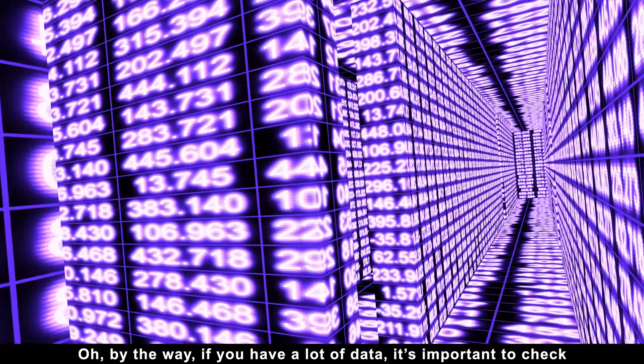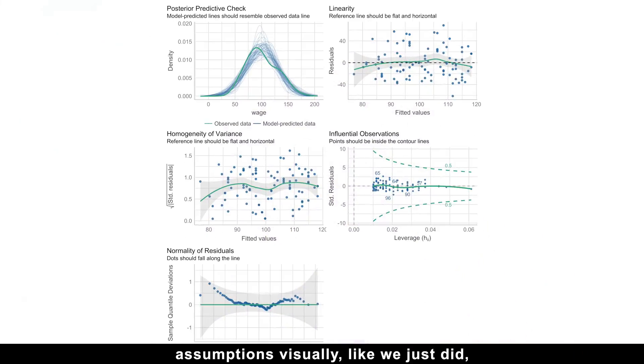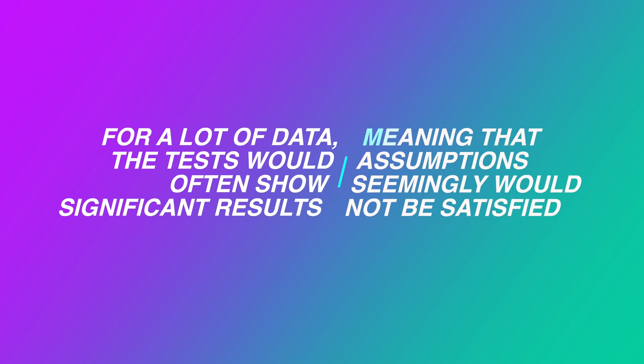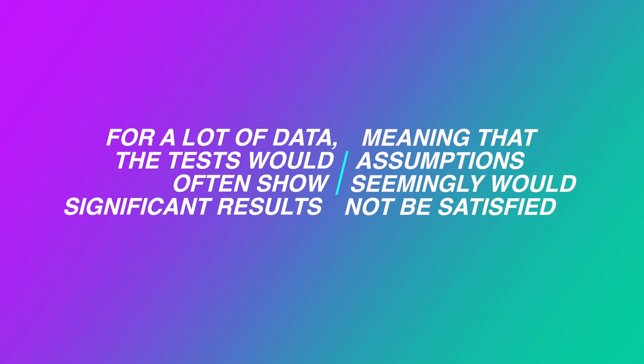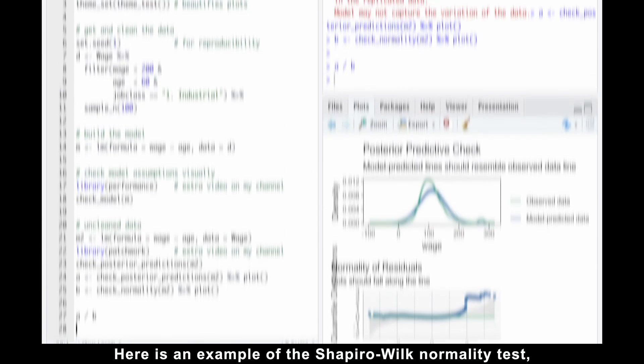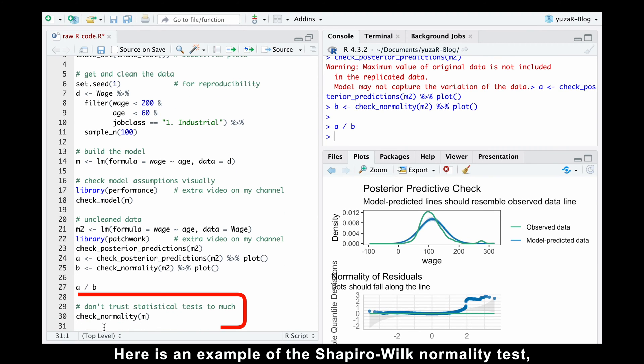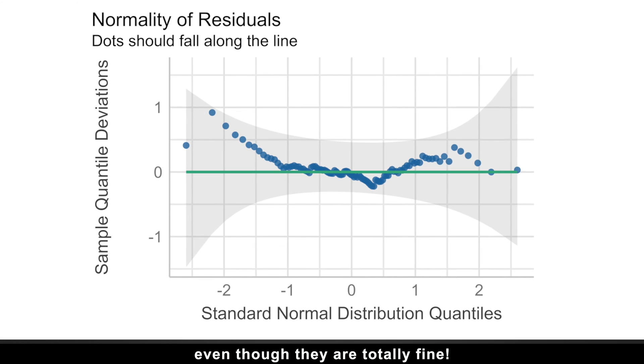By the way, if you have a lot of data, it's important to check assumptions visually, like we just did, instead of conducting statistical tests. For a lot of data, the tests would often show significant results, meaning that assumptions, seemingly, would not be satisfied while they are actually satisfied. Here is an example of the Shapiro-Wilk normality test, which magically finds non-normally distributed residuals, even though they are totally fine.